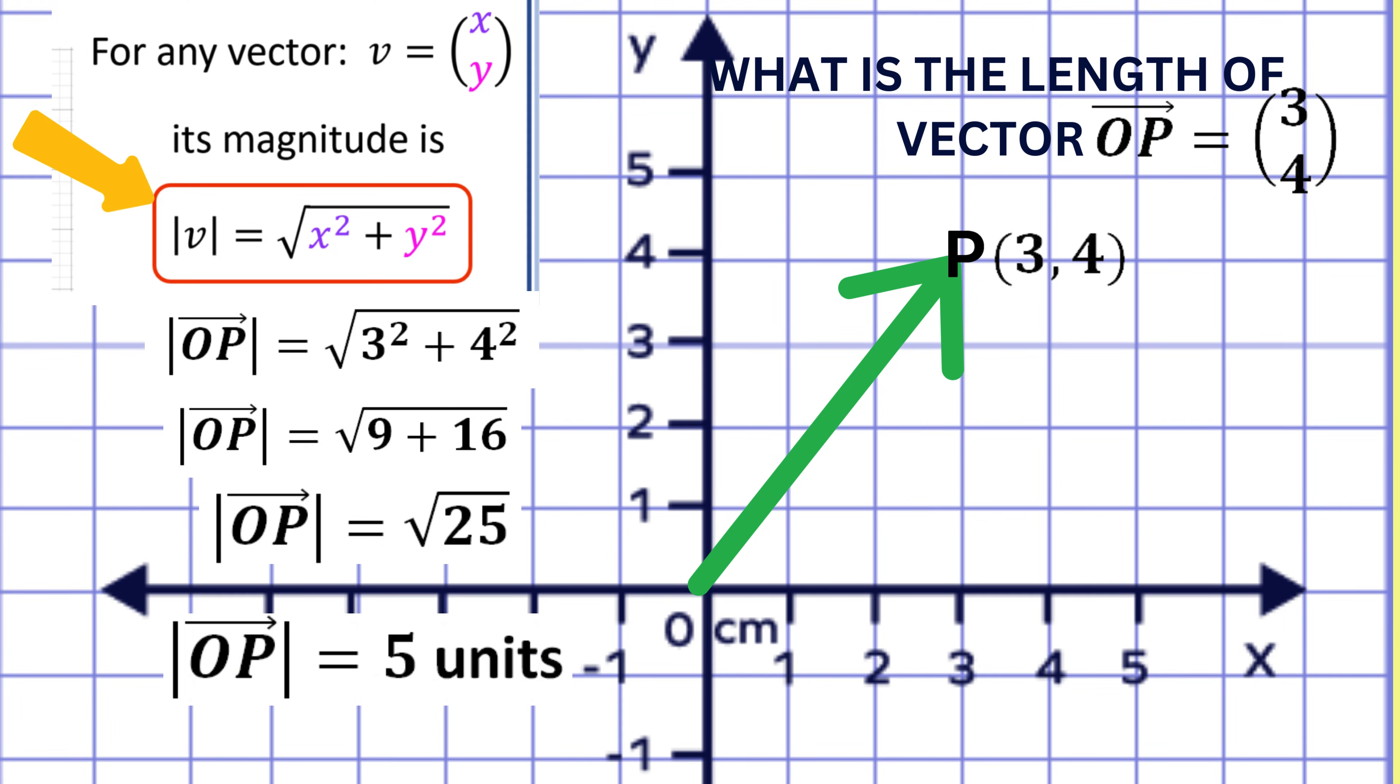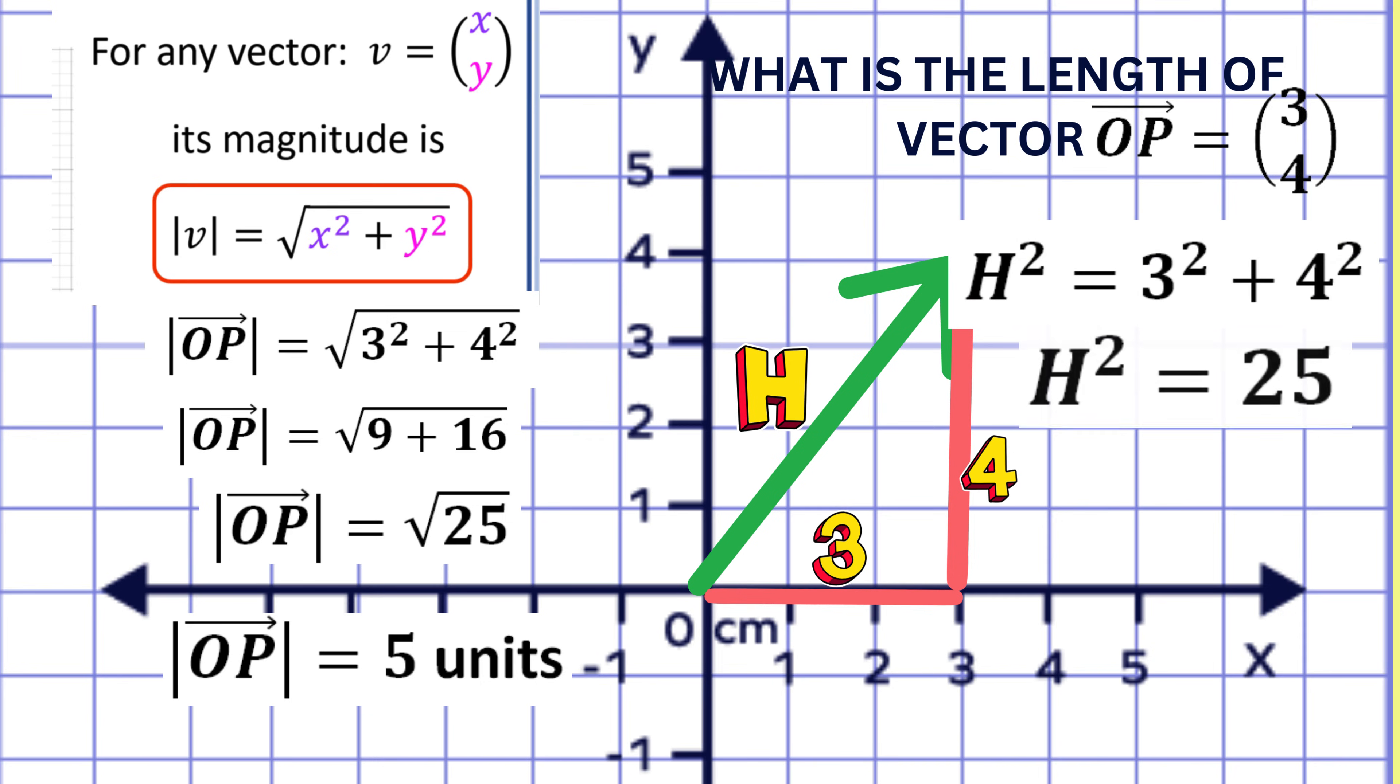By the way, this formula directly comes from Pythagoras' theorem. The length of the vector is the hypotenuse of the triangle. The x and y components of the vector act as the lengths of the two short sides of this triangle. Now, Pythagoras' theorem tells us that the hypotenuse squared is equal to the sum of the squares of the other two sides. The other two sides are 3 and 4, so we can substitute these values to get 5 units for the hypotenuse, which represents the length or magnitude of the vector.